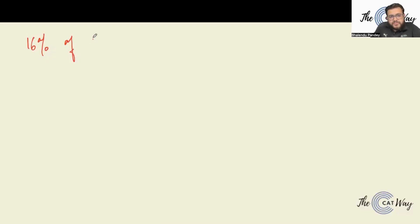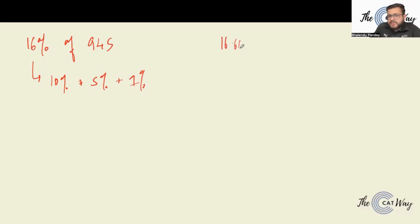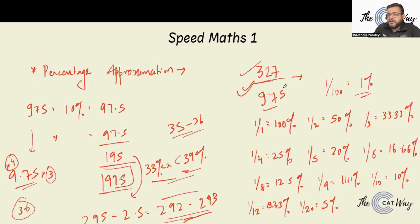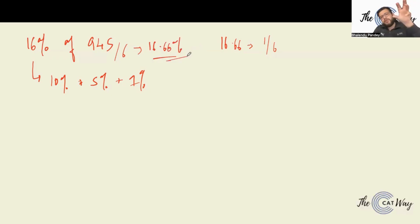Let's try another question: 16% of 945. To calculate 16%, we can do 10% + 5% + 1%. Alternatively, since 1/6 = 16.66%, we could directly divide by 6 to get 16.66%. Either method works — if you need the exact answer, break it down; if approximation suffices, divide by 6. The 10% calculation gives 94.5.